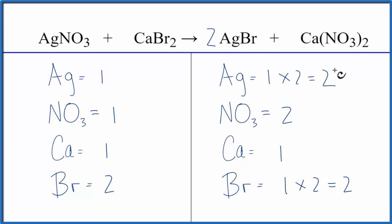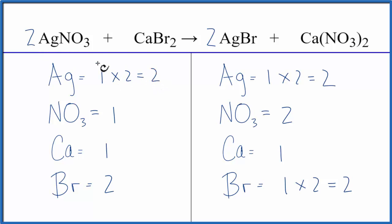Let's fix the silvers, which should also fix the nitrates. If we put a coefficient of two in front of the silver nitrate, one times two gives us two silvers, which balances those. And then we have one nitrate times two as well, which gives us two nitrates — and that fixes the nitrates.